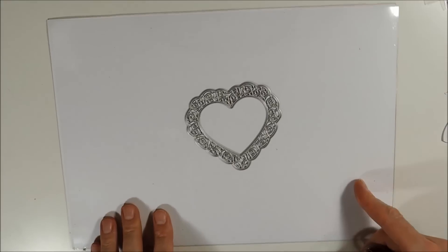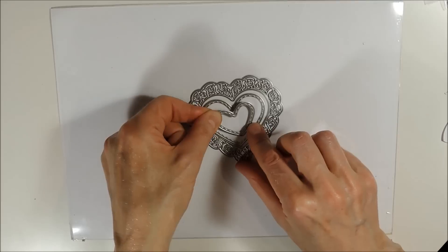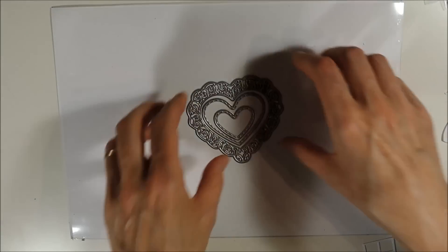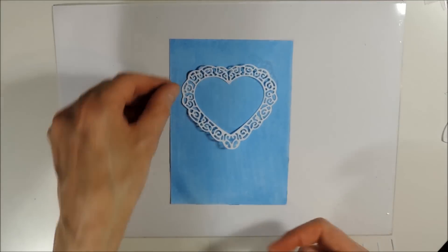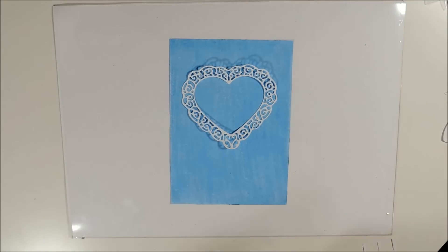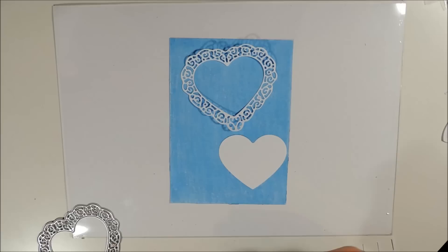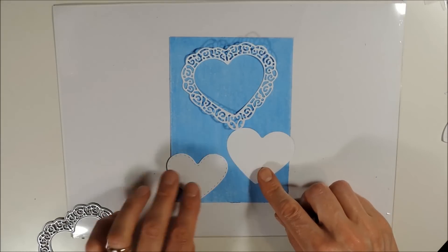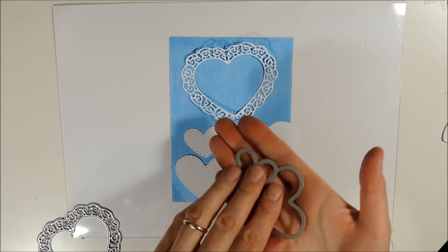Now I have a heart doily die set which consists of three dies and the large die is also cutting out the center so that you end up having three different sizes of heart cut outs but the smaller dies are stitched and the cut out from the center is not stitched. And they look like this.